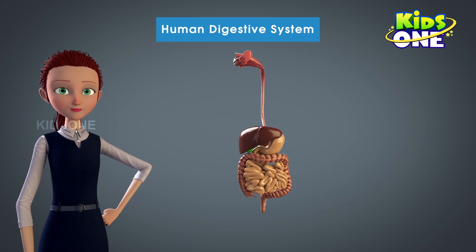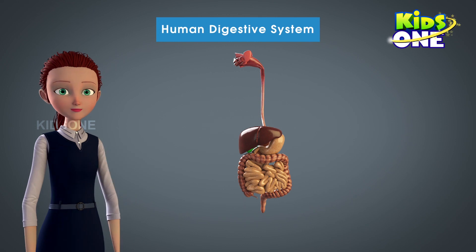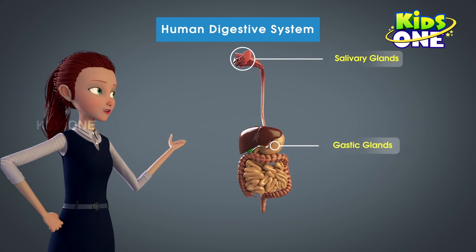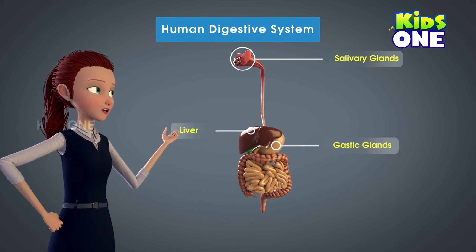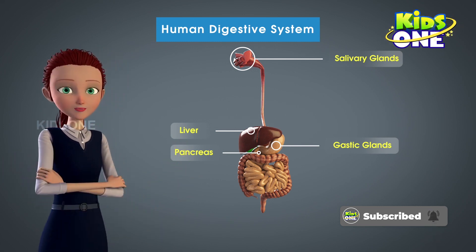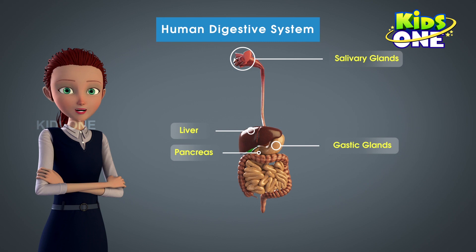This is how food gets digested right from the time it enters the mouth, till the time it is absorbed by the human blood. Beginning from the salivary glands, the gastric glands, the liver, and the pancreas — each one of them plays a major role in the breakdown of food and the completion of the process of digestion.